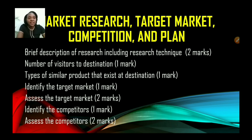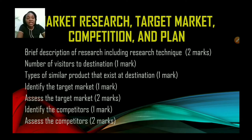Now let us look at the next section, which is market research, target market, competition, and plan. You can see that this section would have the bulk of the marks. A brief description of research including research techniques is 2 marks. Number of visitors to destination, 1 mark. Types of similar product that exist at the destination, another mark. Identify the target market, 1 mark. Assess the target market, 2 marks. Identify the competitors, 1 mark. And to assess the competitors, you will gain 2 marks.